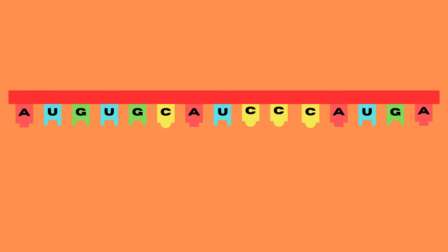So we can read an mRNA strand from left to right in groups of three. Each set of three, or in other words each codon, codes for a specific amino acid.